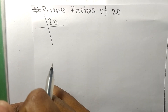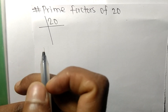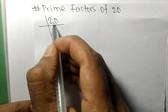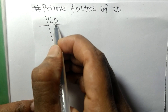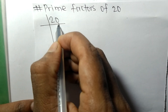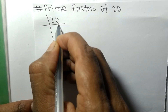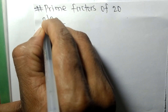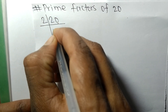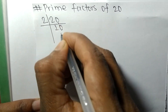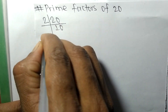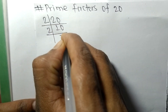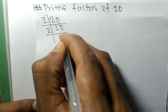Today we shall learn to find the prime factors of 20. Since it ends in 0, it is divisible by 2. So 2 times 10 equals 20, and 2 times 5 equals 10.